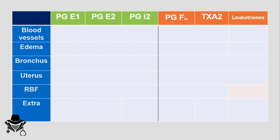Regarding their effect on blood vessels: the 'good' prostaglandins produce physiological vasodilation, while prostaglandin F2α and thromboxane A2 cause vasoconstriction — they are the 'bad' ones. Leukotrienes produce vasodilation, but it is inflammatory vasodilation. For edema formation: the good prostaglandins may cause a slight increase in capillary permeability, but this is not inflammatory. Prostaglandin F2α and thromboxane A2 cause no edema due to vasoconstriction. Leukotrienes cause severe edema formation, as seen in inflammation.